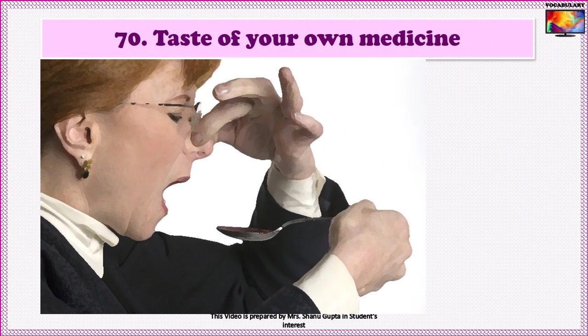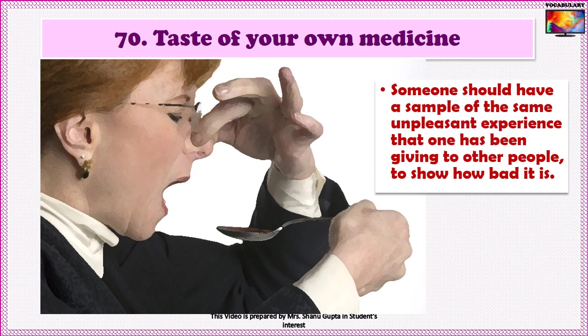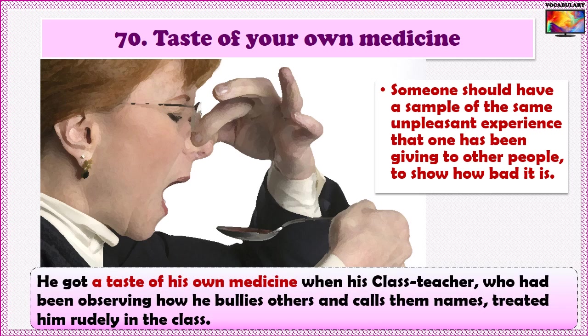Our next expression is 'To have a taste of one's own medicine' or 'to have a dose of one's own medicine.' The expression uses the idea that medicines are generally bitter and it's easier to administer them to others. The idiom is used when someone receives a sample of the same unpleasant experience that he has been giving to other people, which shows him how bad it is. An example: 'He got a taste of his own medicine when his class teacher — who had been observing how he bullies others and calls them names — treated him rudely in class.'